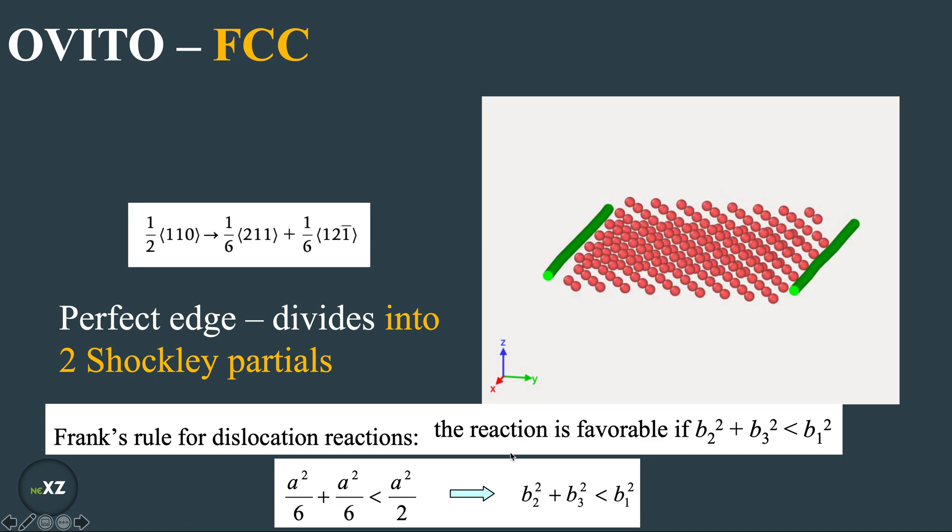So the Frank's rule, the reaction is favorable if this square plus this square is less than b1 squared. So it's basically an energy rule. So the energy is directly proportional to G into b square. G is nothing but shear modulus and b is the Burgers vector.